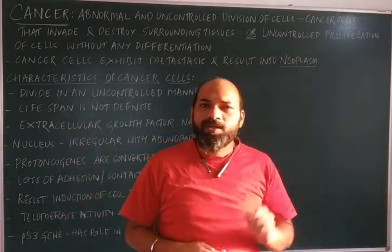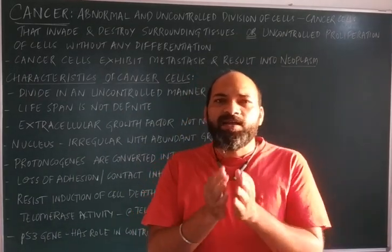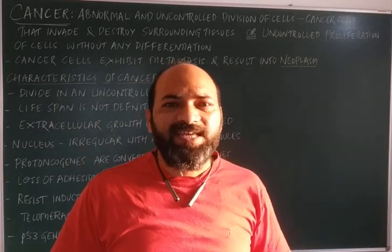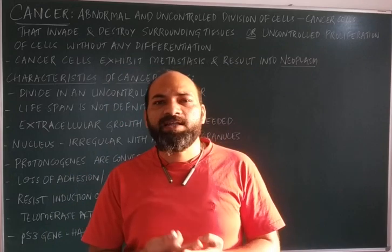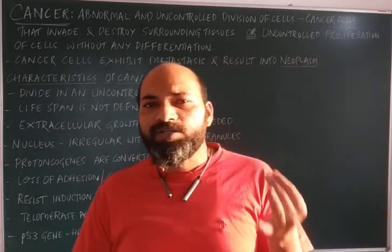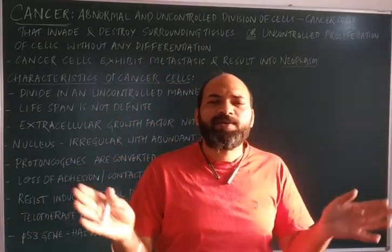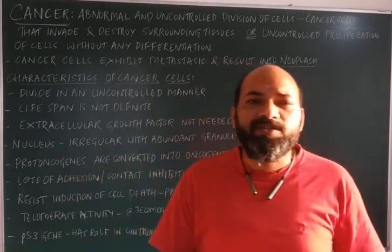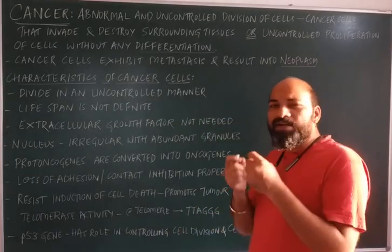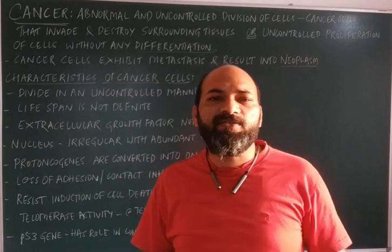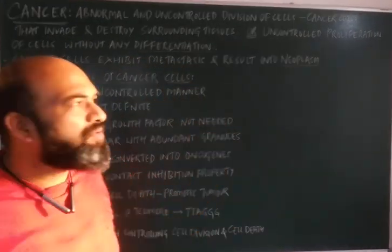Differentiation means that during the fetal stage of life, cells divide and proliferate giving rise to different cell types — such as epithelial cells, nerve cells, nephrons, neurons, astrocytes, microglial cells, oligodendrocytes, and Schwann cells. Cancerous cells do not undergo this differentiation. Whenever a cancerous cell divides, it proliferates continuously, resulting in tumor formation, which suppresses or inhibits the activity of neighboring tissues.